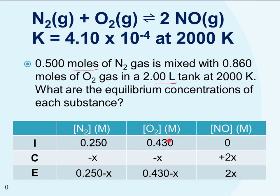There's no mention of NO, so we put a zero in there. Then we look at the change row, which is based on the stoichiometry from the balanced chemical equation. For every mole of N2 I lose, I also lose a mole of O2—the same amount of both—and I gain twice as much of the NO.